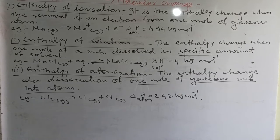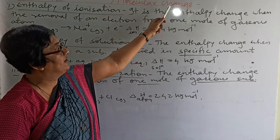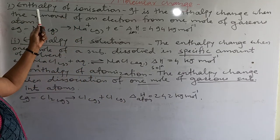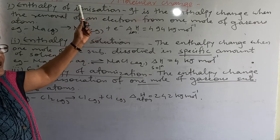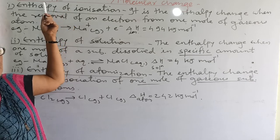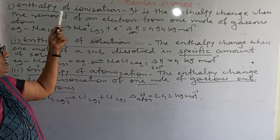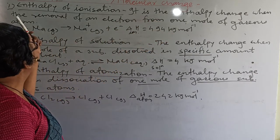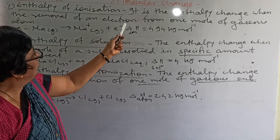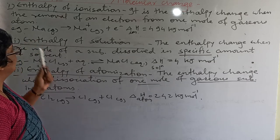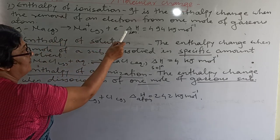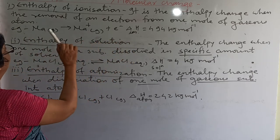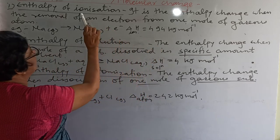The next definition is enthalpy of atomic or molecular change — when there are changes in atoms or molecules. Enthalpy of ionization: you write the definition for ionization when that process takes place for one mole of a compound. It is the enthalpy change when an electron is removed from one mole of gaseous atoms, converting the gaseous atom into an ion. This enthalpy change is called the enthalpy of ionization.